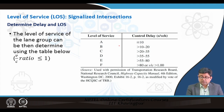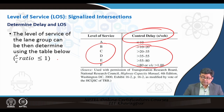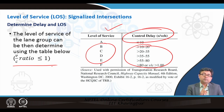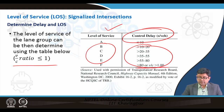Once you know the control delay, you can determine the level of service depending on what your delay numbers are — whether they fall into A, B, C, D, or F. This table applies to all conditions where the V/C ratio is less than or equal to 1 — unsaturated or just at saturation. Anything oversaturated will always have a level of service F, where V/C ratio is greater than 1.